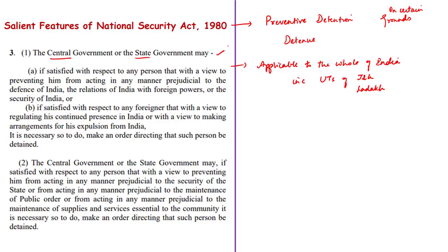The first ground is if any person may act in any manner prejudicial to the defense of India, or to the relations of India with foreign powers, or the security of India. Secondly, if any foreigner is in India and the foreigner's presence needs to be continuously regulated, they can be subjected to preventive detention. Also, a foreigner can be detained if arrangements are being made for their expulsion from India.